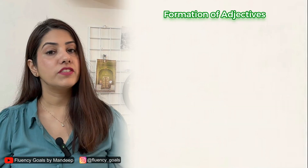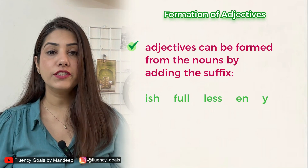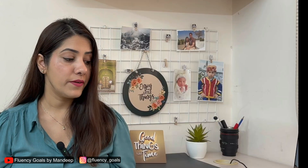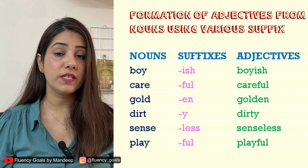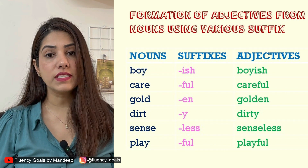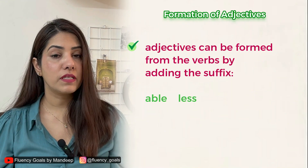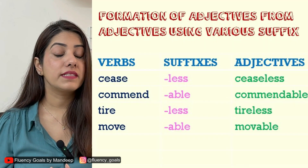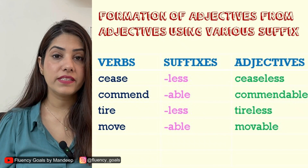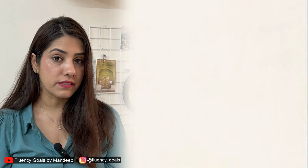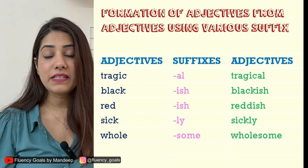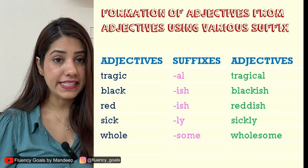Moving on to the formation of adjectives. Adjectives can be formed from nouns by adding suffixes: -ish (boy → boyish), -ful (care → careful), -less (care → careless, sense → senseless), -ful (play → playful), -y (dirt → dirty). Adjectives can also be formed from verbs by adding suffixes -less or -able: cease → ceaseless, tire → tireless, commend → commendable, move → movable. Some adjectives are formed from other adjectives: tragic → tragical, black → blackish, red → reddish, sick → sickly, whole → wholesome. There is no fixed rule — it is learned through practice and usage. So that was all about adjectives.